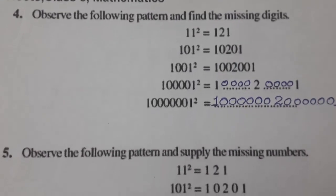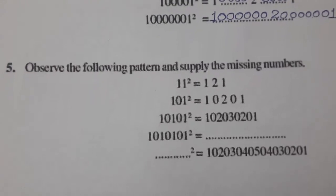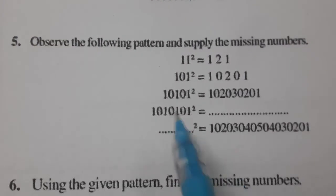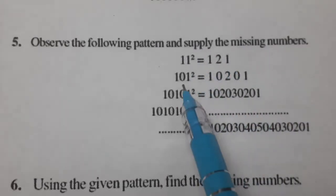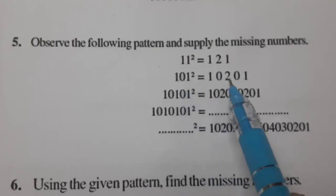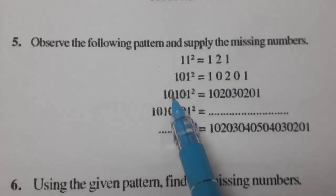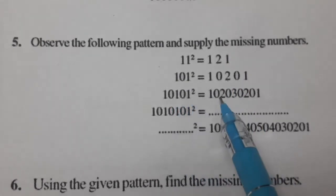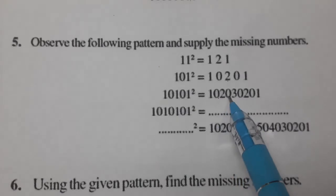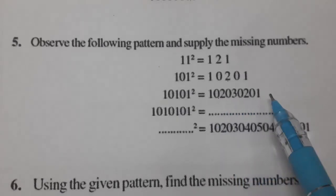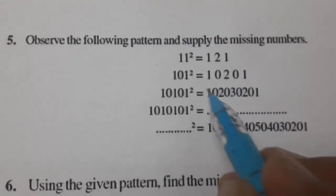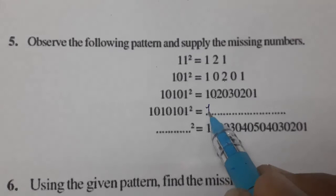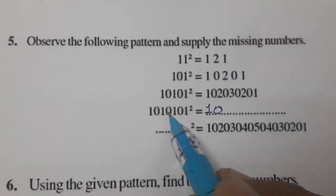Now question number five: again we observe the pattern and fill the missing numbers. 11 squared equals 121. 101 squared gives 10201 — zero two is in the middle. Now 10101: we get 1 zero 2 zero 3 zero 2 zero 1.